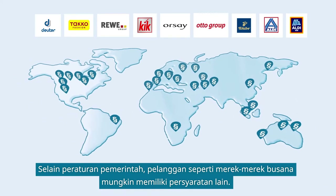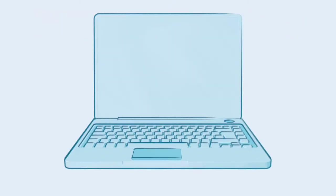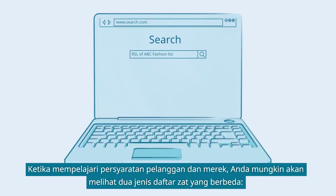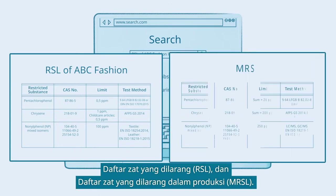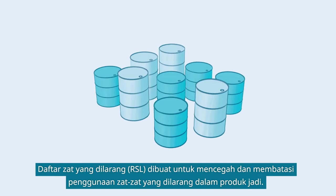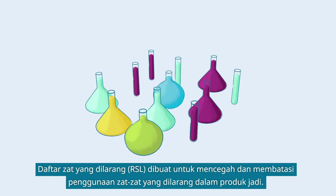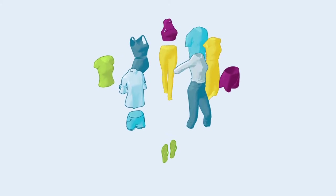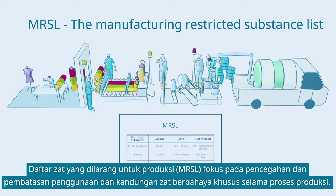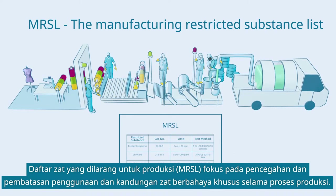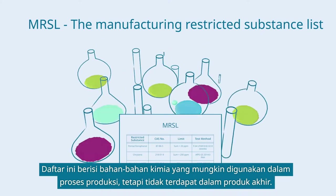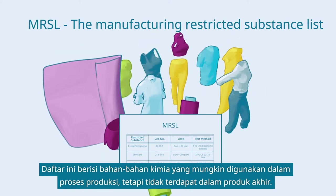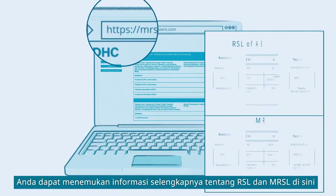In addition to national regulations, customers such as fashion brands may have further requirements. While reviewing customer and brand requirements, you may come across two different lists: the Restricted Substance List and the Manufacturing Restricted Substance List. The RSL aims to prevent and limit the use of restricted substances in finished products. The MRSL focuses on preventing and restricting the usage and presence of specific hazardous substances throughout the entire manufacturing process, including processed chemicals which may be used in manufacturing but are not present in the end product. You can find more detailed information on RSL and MRSL here.